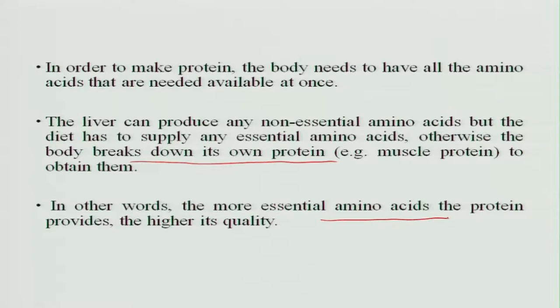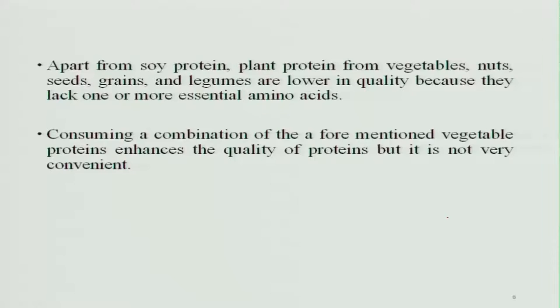The more essential amino acids a protein provides, the higher its quality. If all 9 essential amino acids are present, it is a high-quality protein; otherwise the quality is lower. Apart from soy protein, plant proteins from vegetables, nuts, seeds, grains, and legumes are lower in quality because they lack one or more essential amino acids.